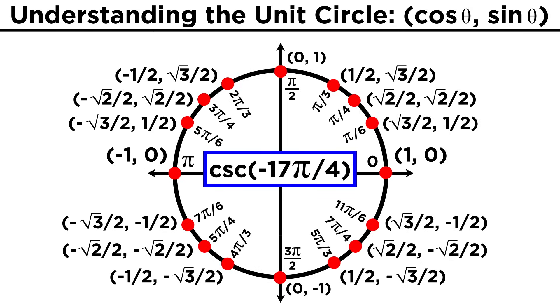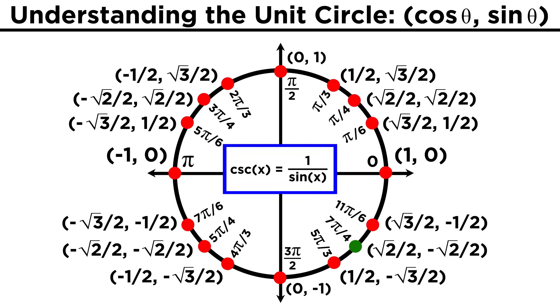What about the cosecant of negative 17π/4? This time we are going in the negative direction. Sixteen-fourths π is the same as 4π, so if we get rid of that, we are just left with negative π/4. That puts us here, where cosine is √2/2, and sine is negative √2/2. Cosecant is one over sine, so we take one over negative √2/2. We can therefore just flip this over to get negative 2/√2, and then we multiply by √2/√2 to get rid of the radical on the bottom. That leaves us with negative √2.